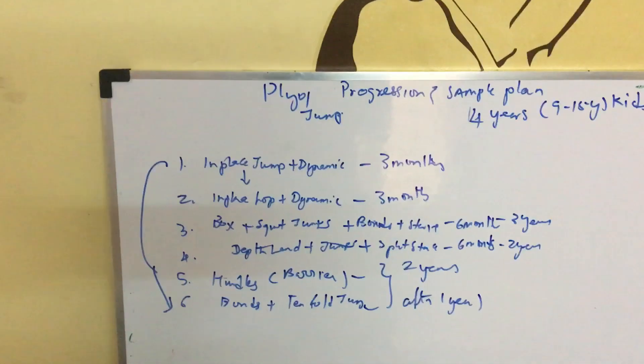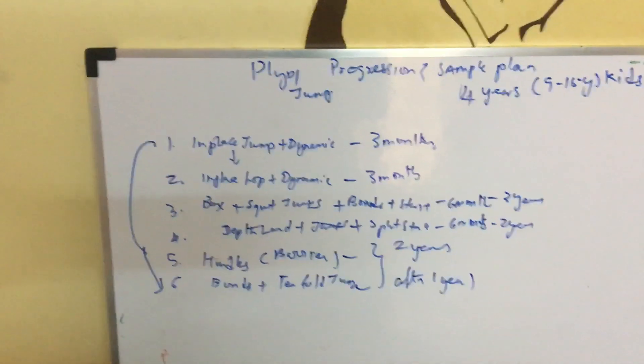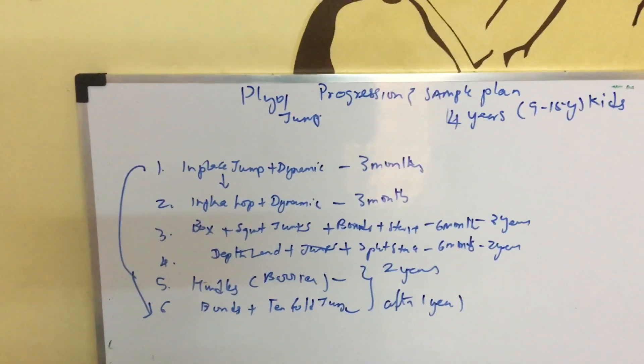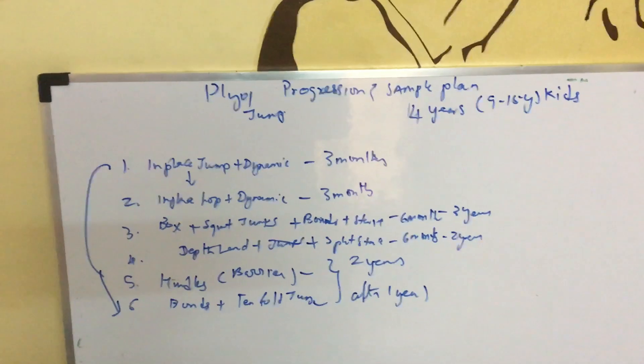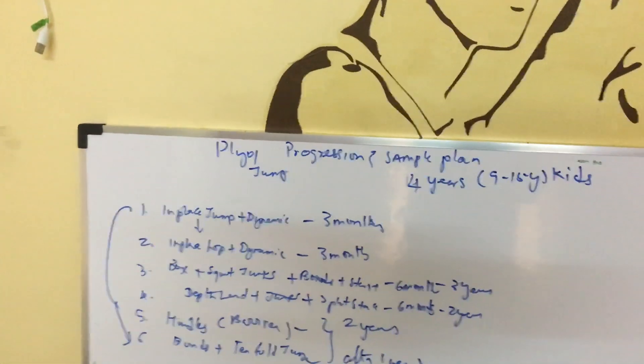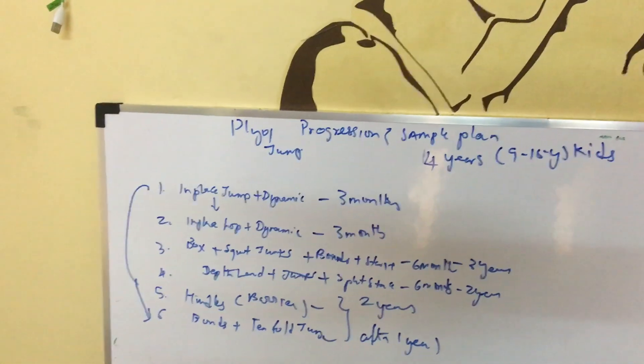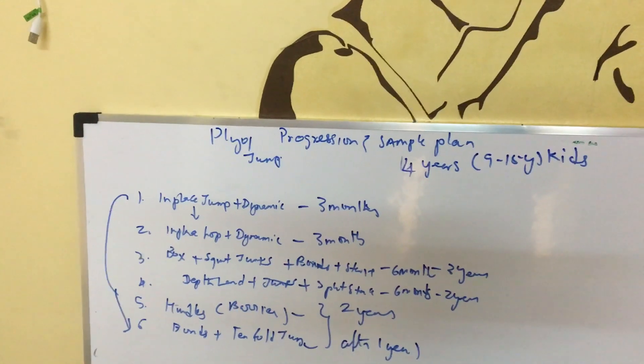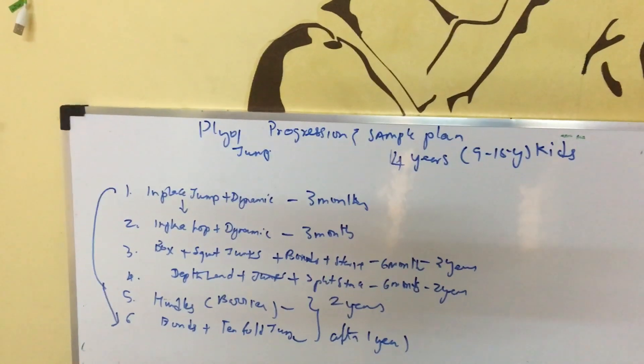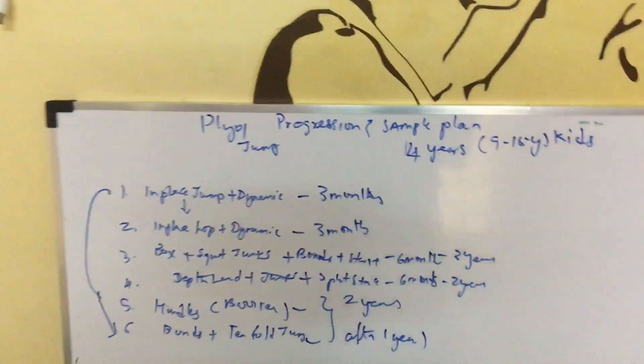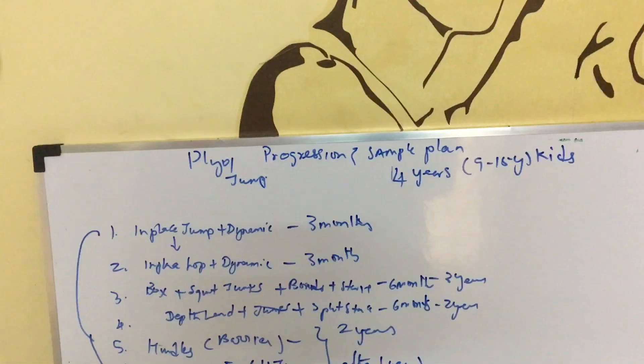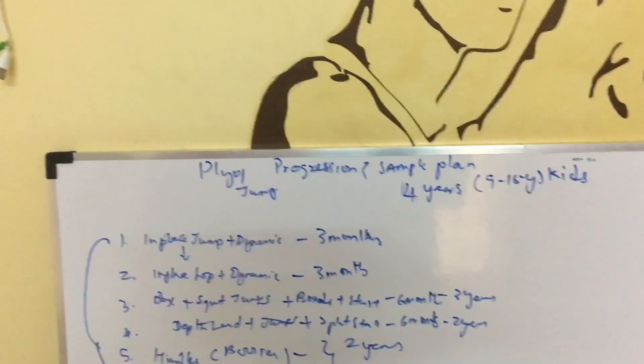Once they master that part of the progression, we can move into hops in place and dynamic, which takes six months to one year. This entire step can take up to two years. These kids need progression, not performance enhancement. It may sound counterproductive, but two years of solid foundation is essential.